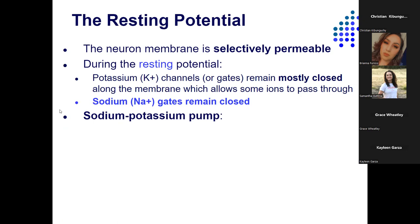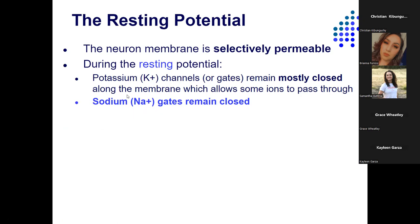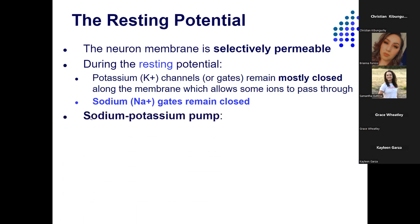During the resting potential, potassium channels are mostly closed — meaning partly open, so some potassium can pass through the membrane. However, sodium channels are pretty much slammed shut; there's virtually no sodium moving through the membrane when the neuron is at rest. This is important to remember: sodium channels are closed at rest.